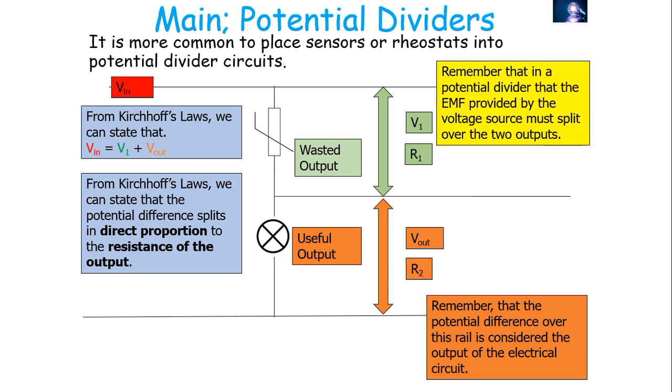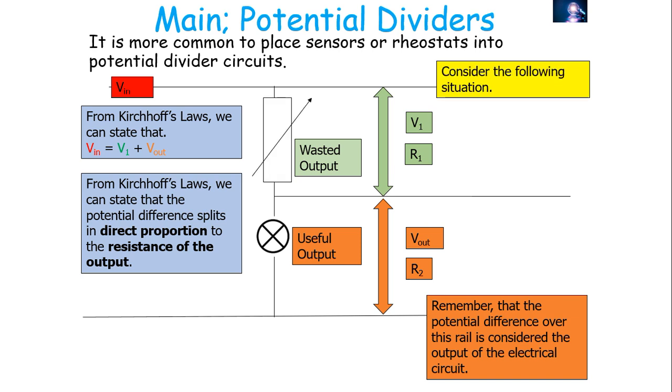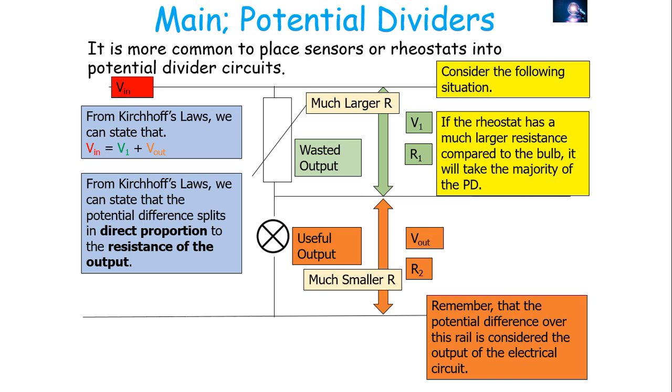In a potential divider the EMF from the battery must split over the two outputs. Consider a potential divider with a rheostat as the wasted output and a bulb as the useful output. If we set the rheostat to have a much larger resistance compared to the bulb, it's going to take the majority of the potential difference, because potential difference splits in direct proportion to the resistances. So the rheostat takes a much larger potential difference, leading to a dim bulb. When you work through P = IV or P = I²R, there's a lot less power going to the bulb, so it's a lot dimmer.